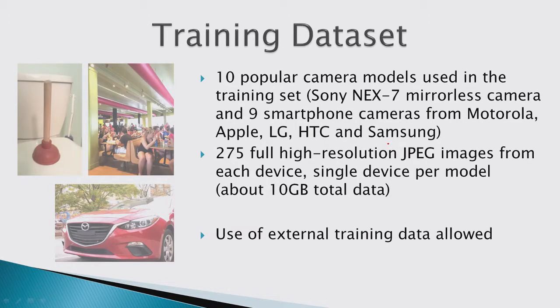Here is a description of the training dataset. They used 10 popular camera models — nine were smartphone cameras and the other was a Sony NEX-7, a mid-range camera. They had 275 full high-resolution JPEG images from each device, a single device per model, amounting to about 10 gigabytes of total data.